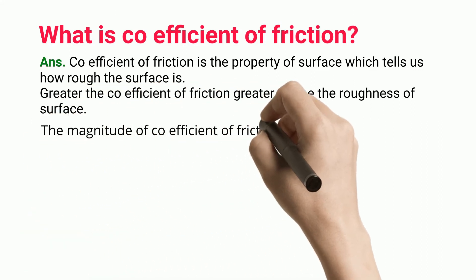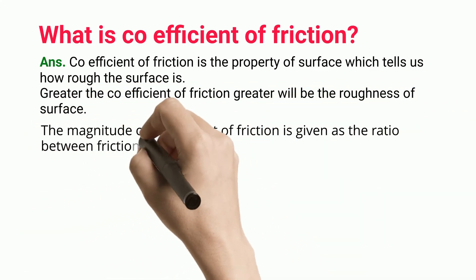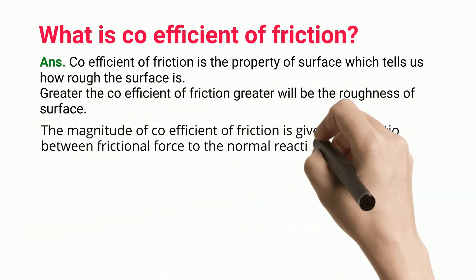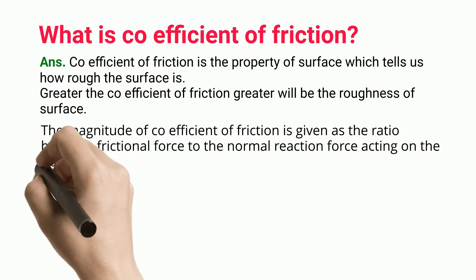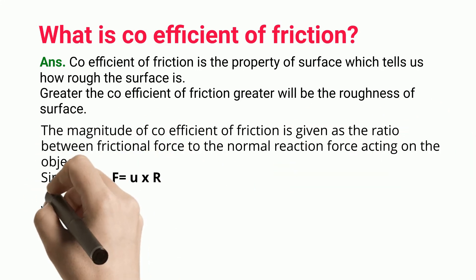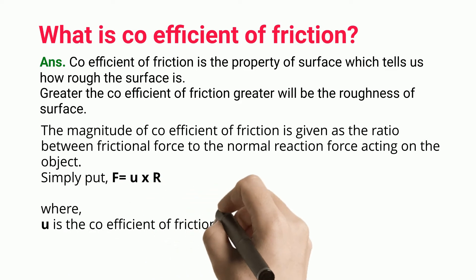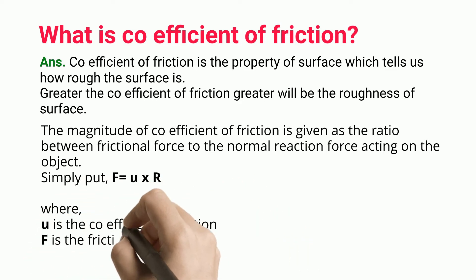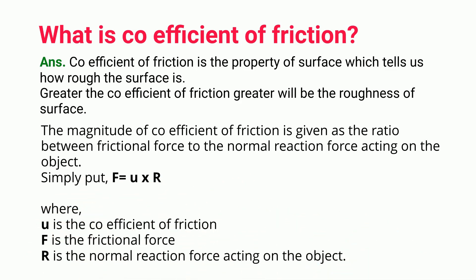The magnitude of coefficient of friction is given as the ratio between frictional force and the normal reaction force acting on the object. Simply put, F equals μR, where μ is the coefficient of friction, F is the frictional force, and R is the normal reaction force acting on the object.